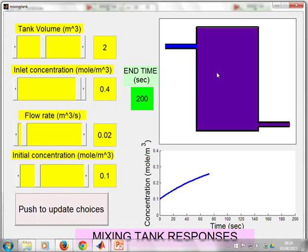And you'll notice how the colors change in the tank as it gets to the concentration of the inlet. And you have this line plot here which shows you how quickly the concentration is changing.